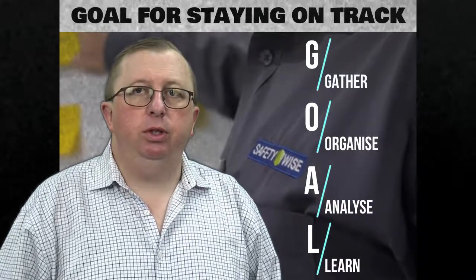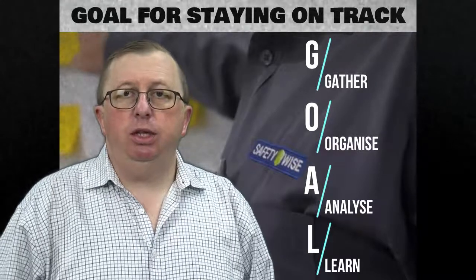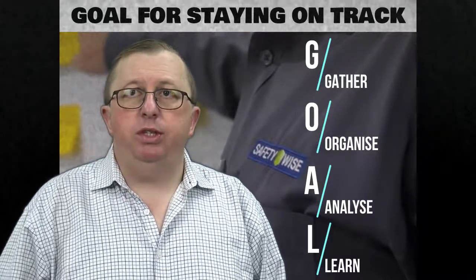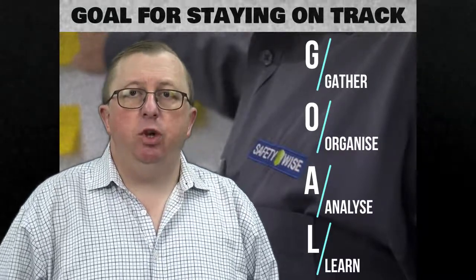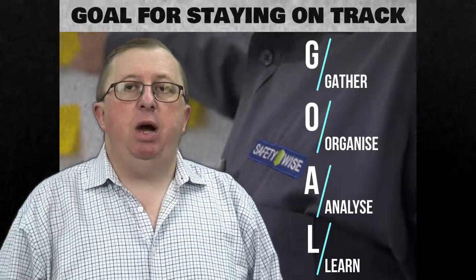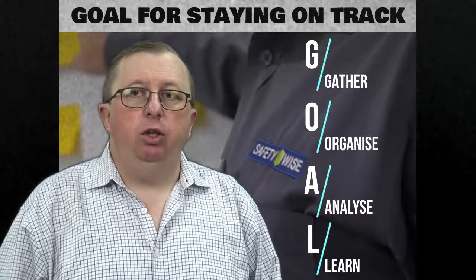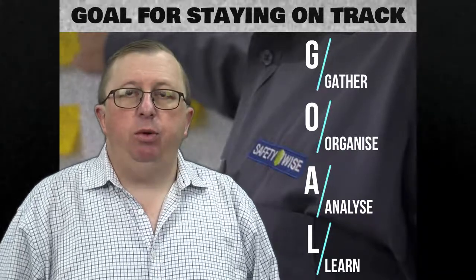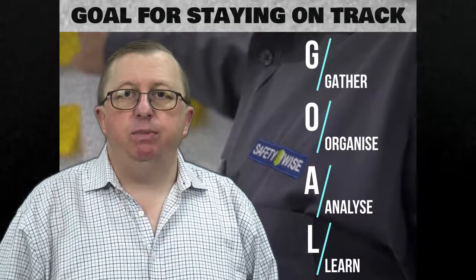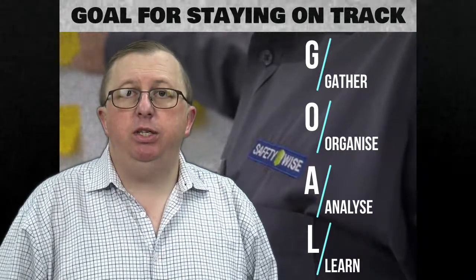Then we go to L for Learn — this is about how we learn from the incident. So if we look at Gather and Organize, this is about determining what happened. Analyze is about why it happened. And the Learning is about how we prevent recurrence. So there you have it — GOAL — a quick and easy way to stay on track with your investigations.